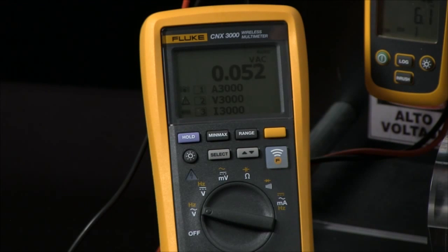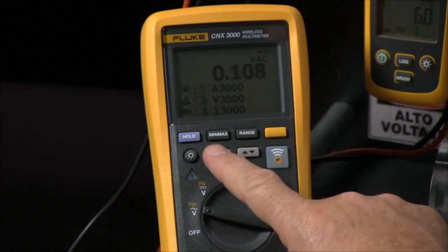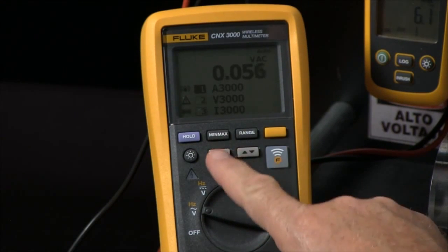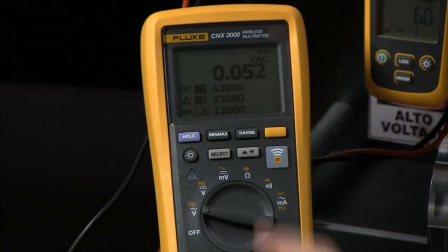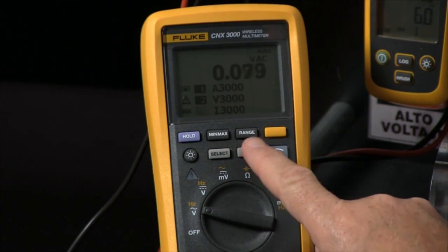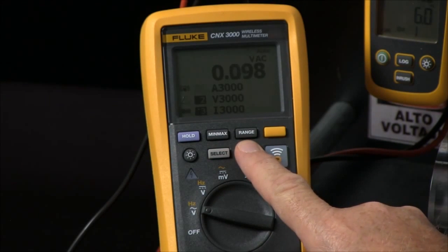Here it came up and showed us we have the A3000. I'll select that. I go to the down arrow. I want to see the voltage module. I will select that. Then I have the i3000 flex clamp module. I'll select that.